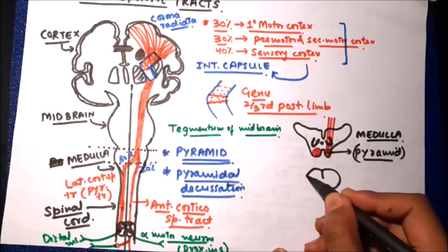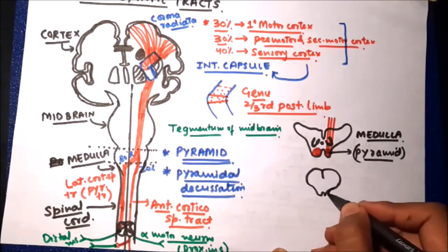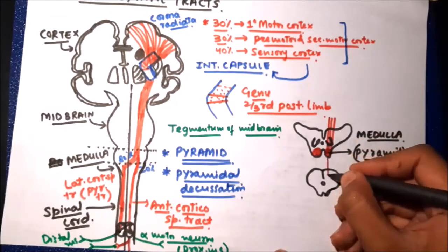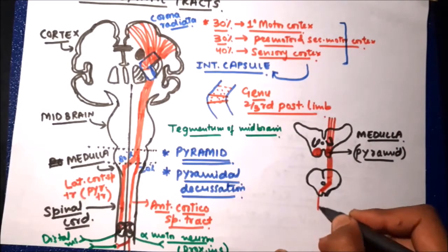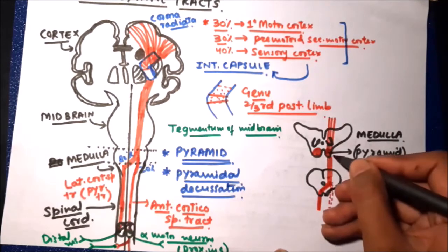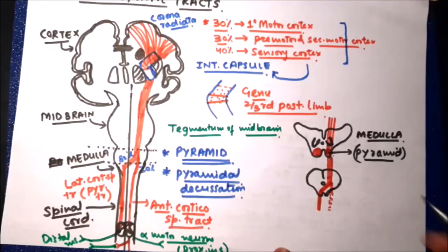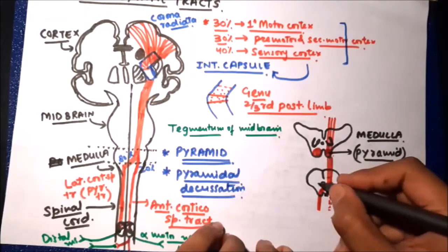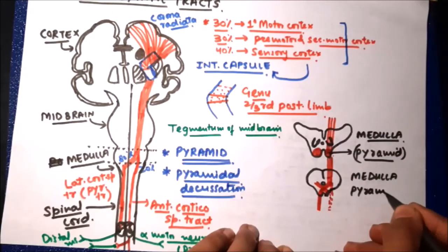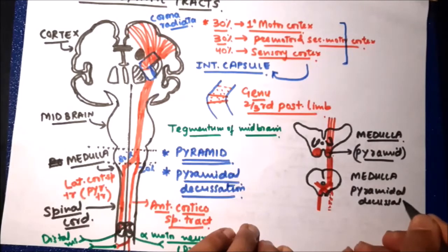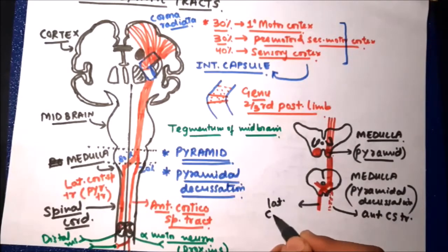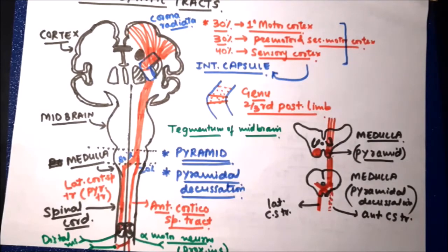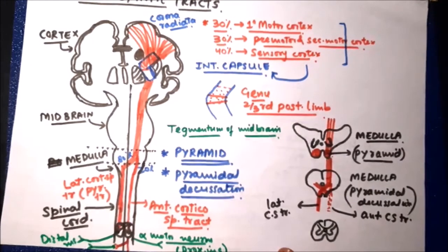At a slightly lower level in the medulla these fibers undergo crossing called pyramidal decussation. In a section at the level of pyramidal decussation, 80% of fibers cross to the opposite side and descend as the lateral corticospinal tract, while 20% of fibers remain uncrossed and form the anterior corticospinal tract.